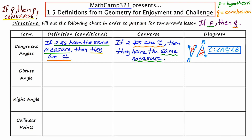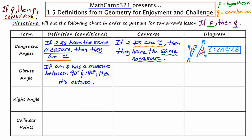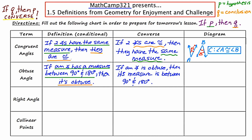Let's move to obtuse angle. In conditional form: if an angle has a measure between 90 and 180, then it is obtuse. The hypothesis is 'an angle has a measure between 90 and 180,' and the conclusion is 'it is obtuse.' The converse, by interchanging P and Q, would be: if an angle is obtuse, then its measure is between 90 and 180. The measure piece moved from the beginning to the end, and 'obtuse' moved from the end to the beginning.